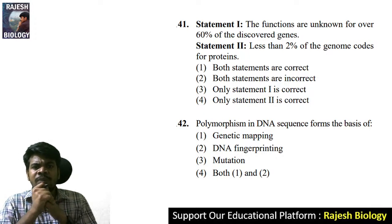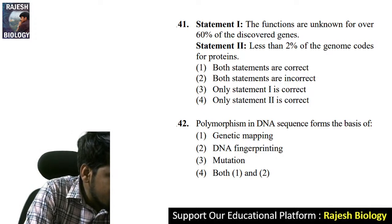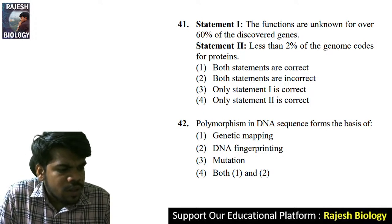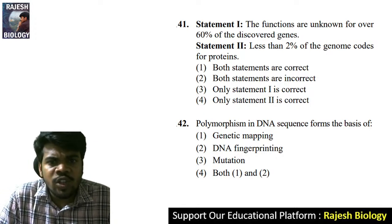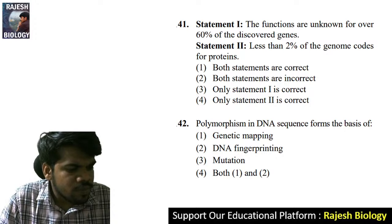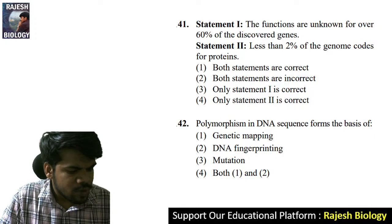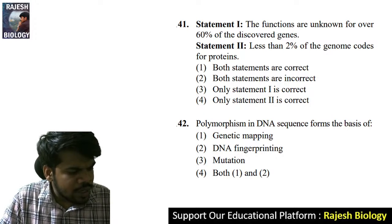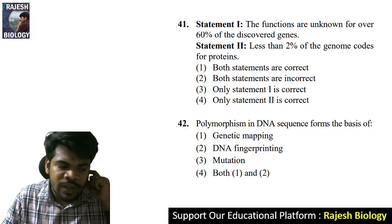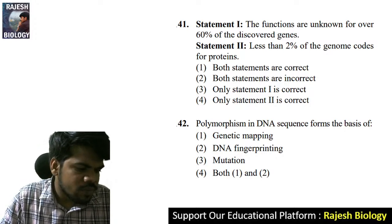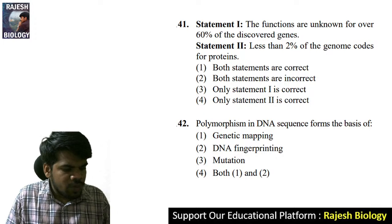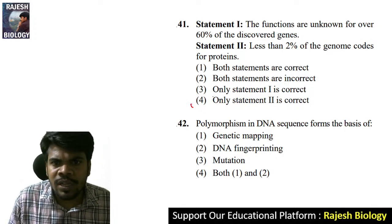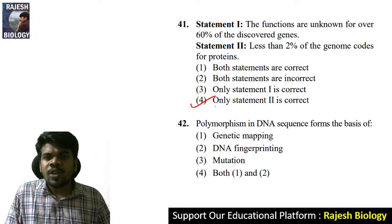Question 41: statement one — functions are unknown for over 60% of discovered genes. Statement two — less than 2% of the genome codes for proteins. Statement one is wrong. Only statement two is correct — less than 2% of the genome codes for proteins. The right answer is option four.